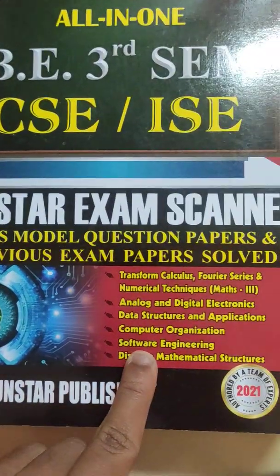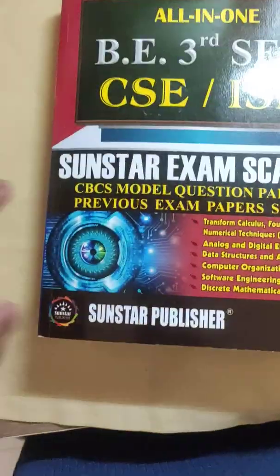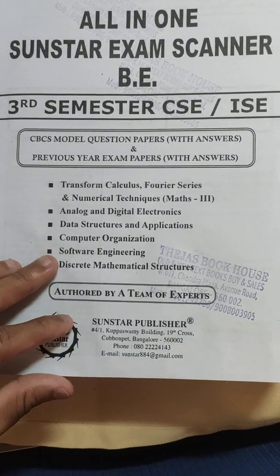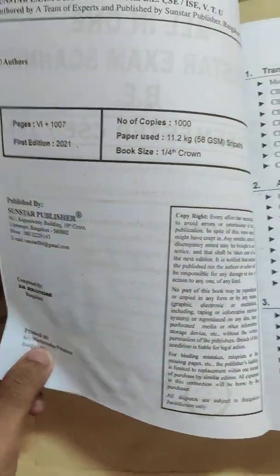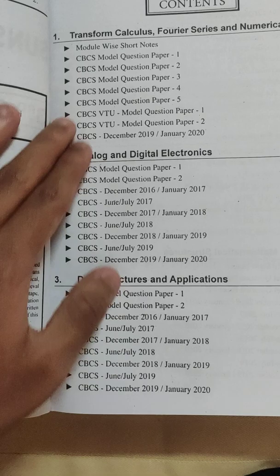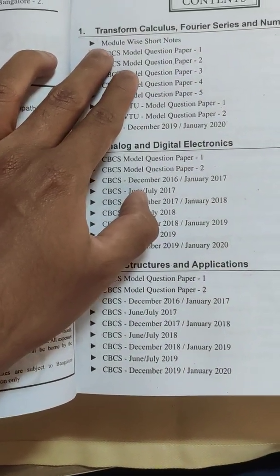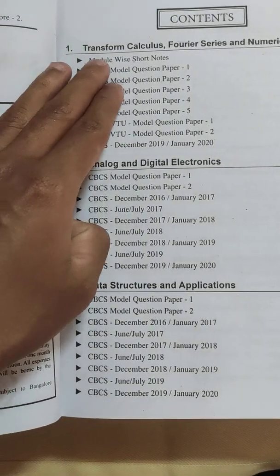We can see these are subjects in BE 3rd semester CSE ISE. Both CS and IS master have the same 2nd year syllabus so you can refer this book. As you can see for maths, model wise notes are also given. If you have seen my previous semester Sunstar book reviews, this is common.